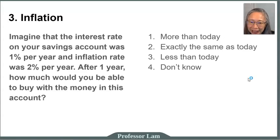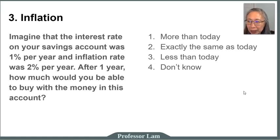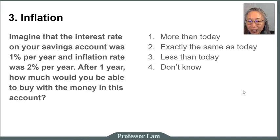Going on to question three, regarding inflation. Imagine that the interest rate on your savings account was 1% per year and the inflation rate was 2% per year. After one year, how much would you be able to buy with the money in this account? One is you'll be able to buy more than today. Two is exactly the same as today. Three is less than today. Four is I don't know — and that's perfectly okay to write number four if that is your answer. Write down your answer and pause if you need more time.